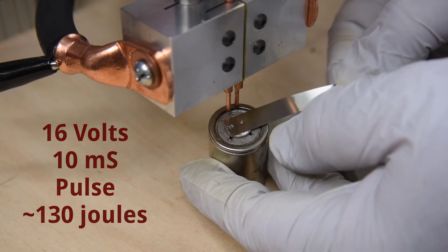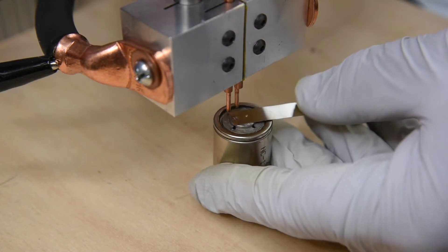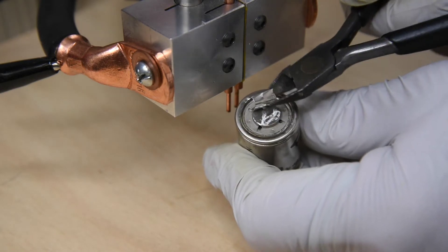130 joules here, and the welds just get weaker as the energy goes up and the melt around the welds increases.